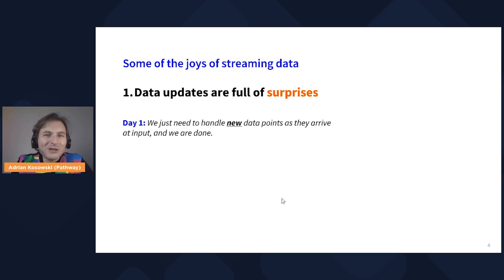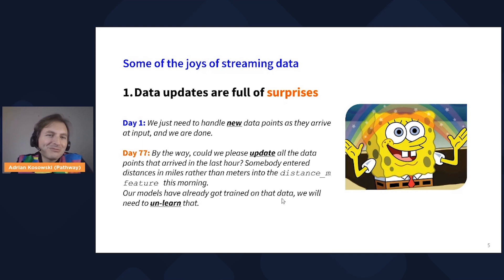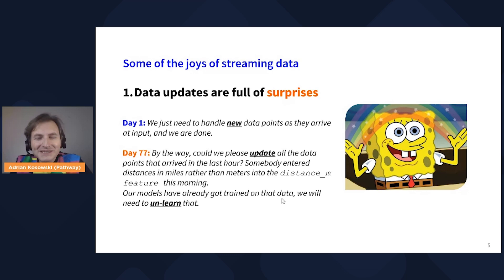Some of the joys of streaming data: first of all, data updates are full of surprises. You may start out assuming you just need to handle new data points as they arrive. But after a while, it turns out many more update scenarios have to be foreseen. For example, on day 77: could we please update all the data points from the last hour? They arrived broken — somebody entered a feature called 'distance M' in miles instead of meters. We have to update all the data, and what's worse, our models have already been trained on that data, so we'll need to unlearn and relearn.